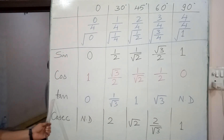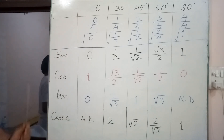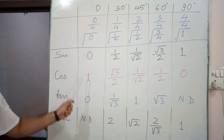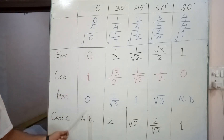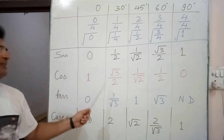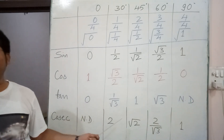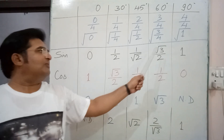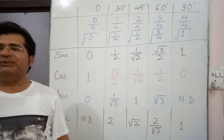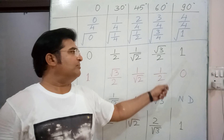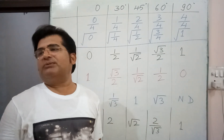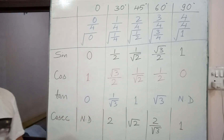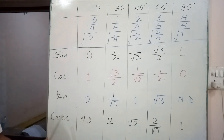To find the values of tan, use the formula: tan θ = sin θ / cos θ. Dividing the sine values by the corresponding cosine values: 0/1 = 0, (1/2)/(√3/2) = 1/√3, (1/√2)/(1/√2) = 1, (√3/2)/(1/2) = √3, and 1/0 is not defined because division by zero is not defined. So we get all the tan values.